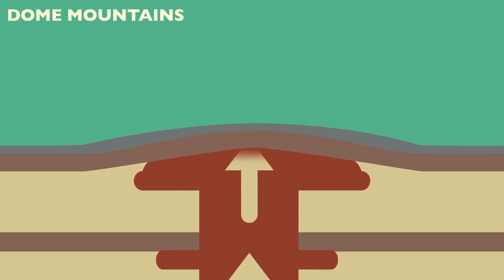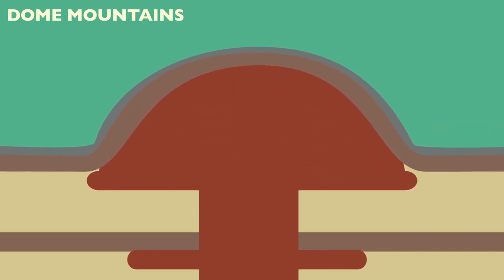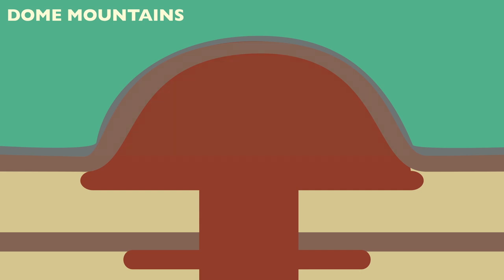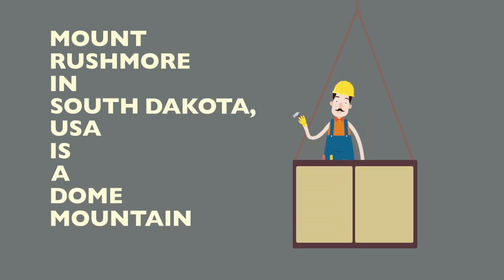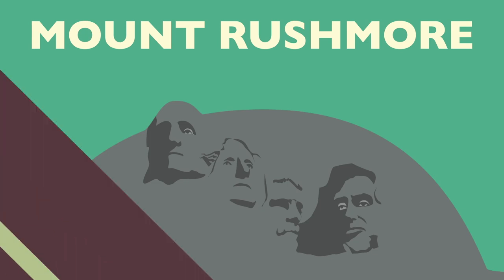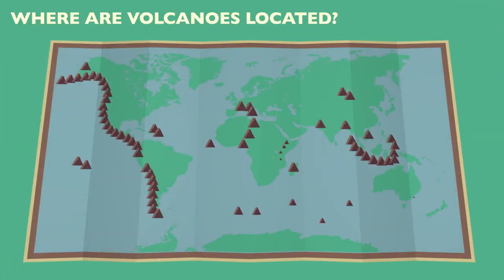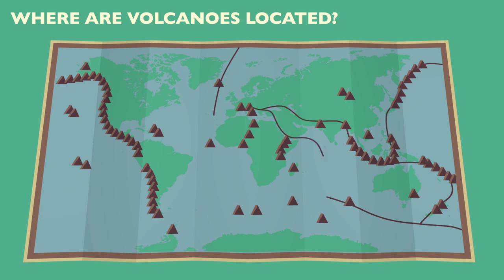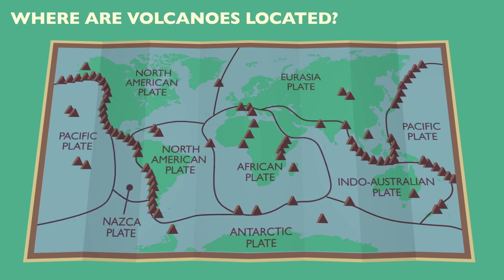Dome mountains are the result of molten rock from the mantle pushing its way up under the Earth's crust without actually erupting onto the surface. The magma pushes up the overlying layers of rock, which then bulge upwards. Eventually the magma cools and becomes hardened rock. There are approximately 500 active volcanoes in the world; on average, 25 of these erupt each year. Volcanoes, like earthquakes, primarily occur on the boundary between two tectonic plates. Volcanoes are formed when magma penetrates through the Earth's crust. Some volcanoes are active, erupting regularly; others are dormant and have not erupted in the recent past; extinct volcanoes are dead and will not erupt again.